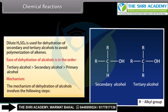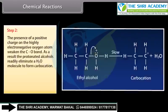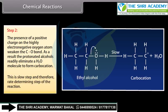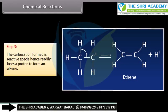The mechanism of dehydration of alcohols involves the following steps. Step 1: Protonation of alcohol. Due to the presence of lone pair of electrons on oxygen, alcohols act as weak bases and therefore accept proton from acids to form oxonium salts. Step 2: The presence of a positive charge on the highly electronegative oxygen atom weakens the CO bond. As a result, the protonated alcohols readily eliminate a water molecule to form carbocation. This is the slow and rate determining step. Step 3: The carbocation formed is a reactive species, hence readily loses a proton to form an alkene.